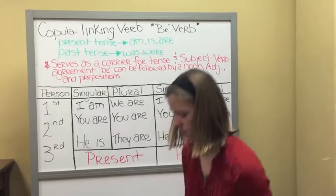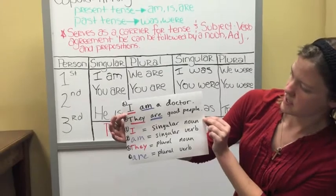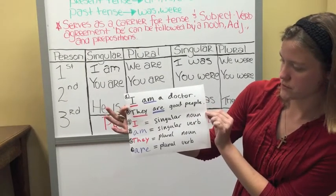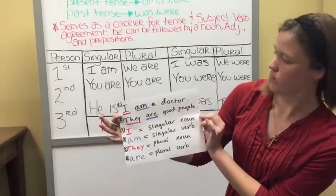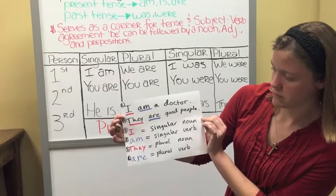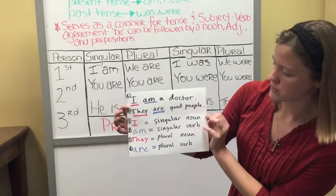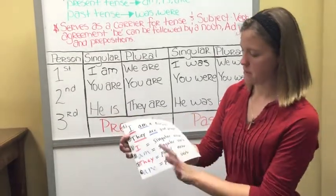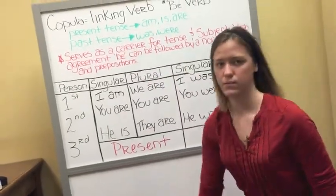An example of this: we have a couple of sentences. 'I am a doctor.' I is singular, so it receives the singular verb am, which is a be verb — a copula. 'They are good people.' They, as you can see, is plural, and it receives the plural verb are. Am and are, in this case, are examples of the copula be verb.